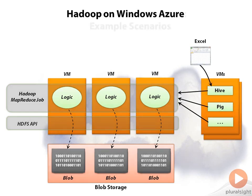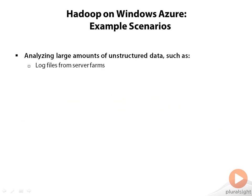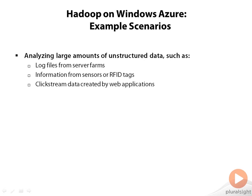When would you use Hadoop? Well, it's about big data — when you want to analyze large amounts of unstructured data. For example, log files from server farms, or information from sensors or RFID tags, or maybe clickstream data from web applications, or lots more.